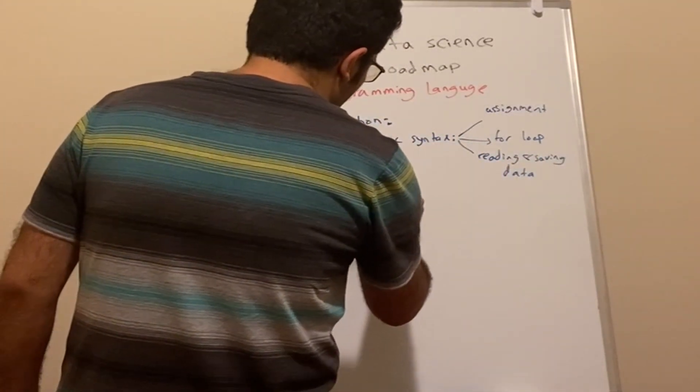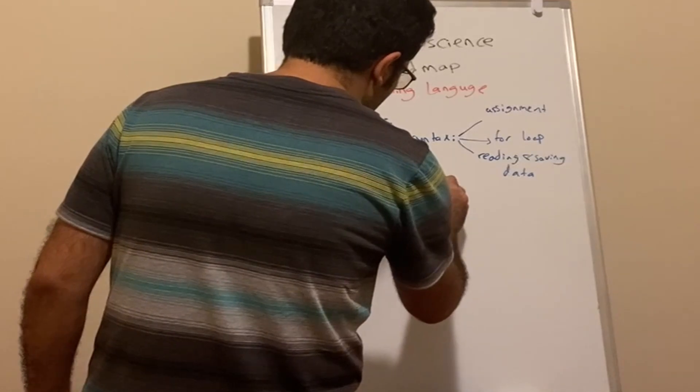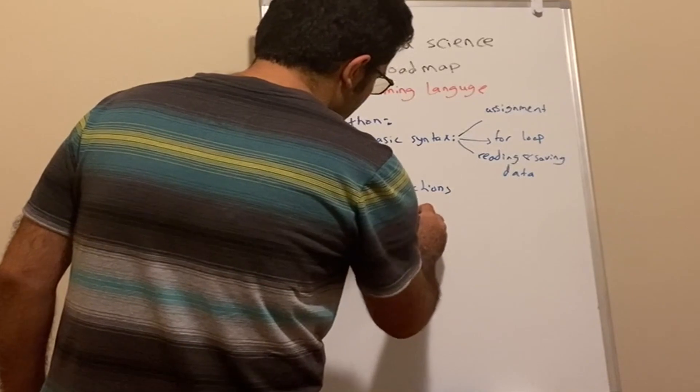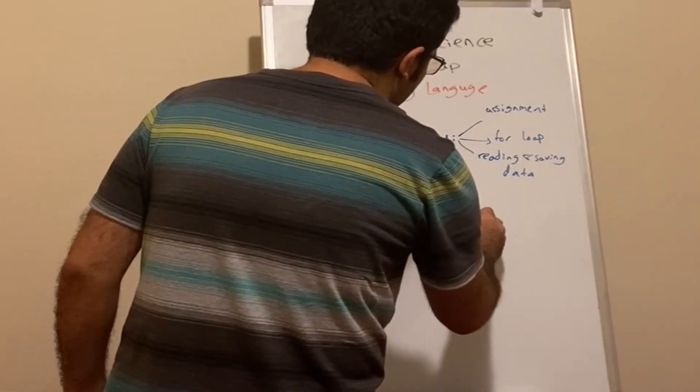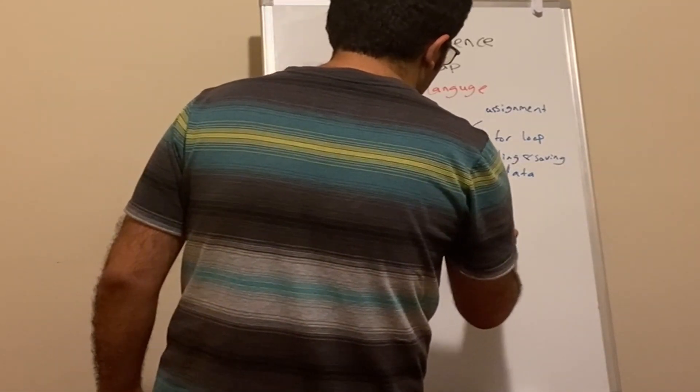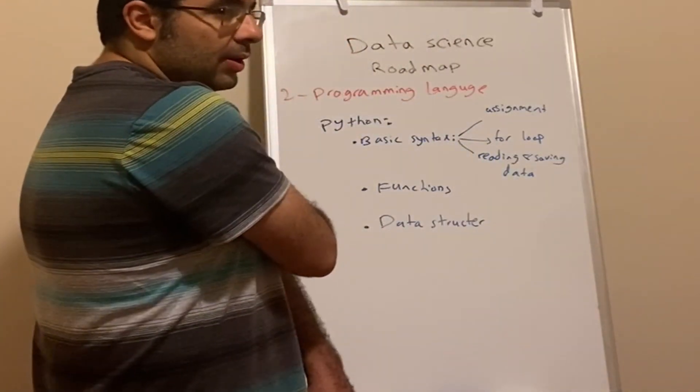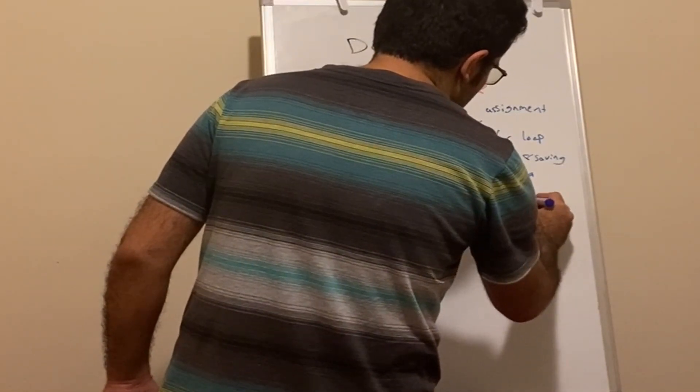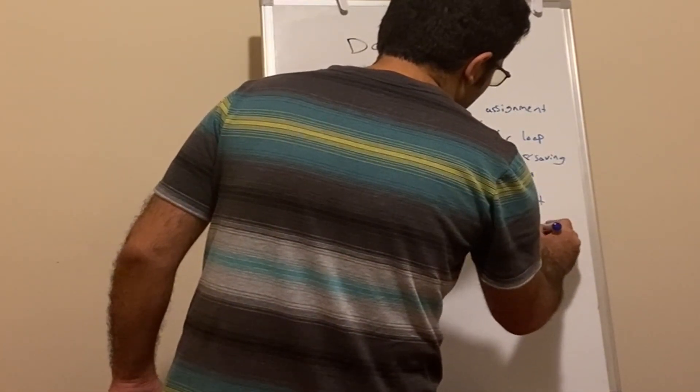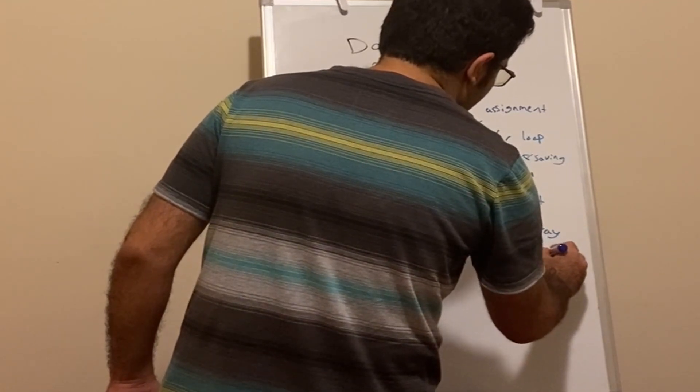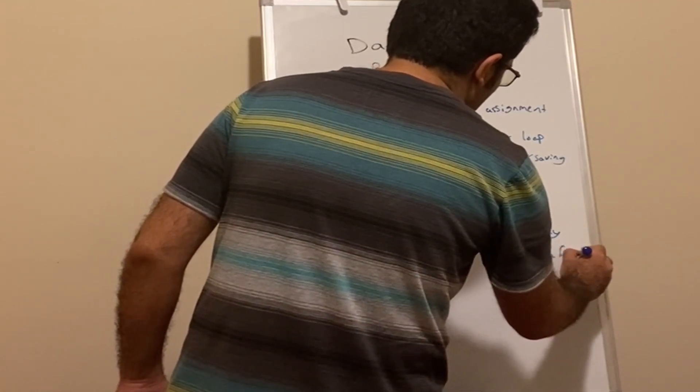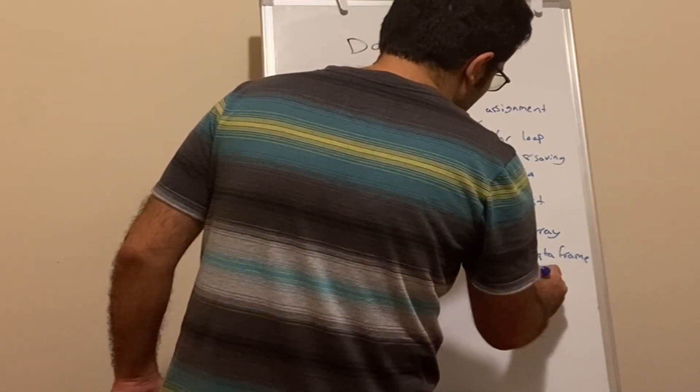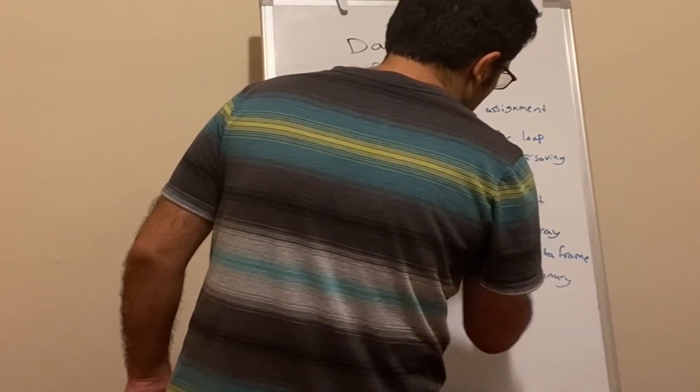We need to understand data structures. I'm not talking about crazy data structures like heap or graph, I'm talking about basic ones - list, array, data frame, dictionary, and sets. This is what we need to know.